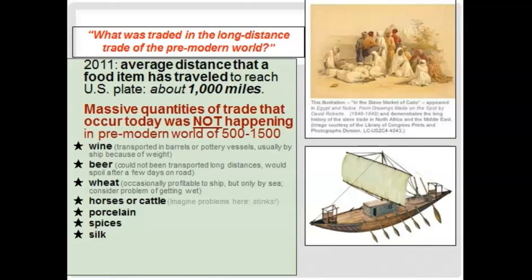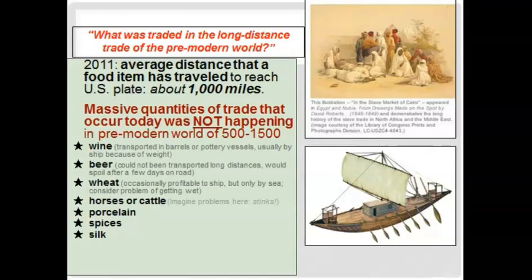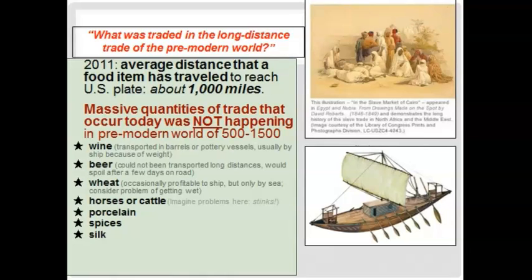Looking at examples of traded items: wine could only go so far because it would spoil, and had to be shipped over water due to its weight — you're not going to put wine on a camel's back. Beer definitely can't be transported long distance; it spoils after a few days, so it's more of a local item. Wheat is sometimes profitable shipped, but only by sea. Then you have higher-end items — porcelain, spices, and silk — which could travel the Silk Roads because they're high-value and don't need to be traded in high volume.